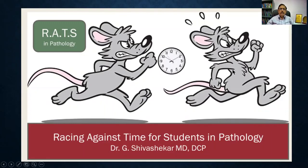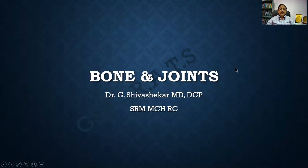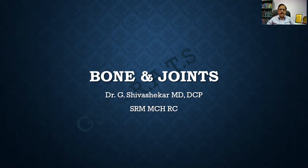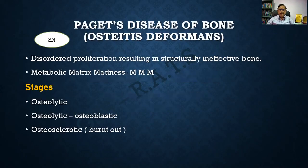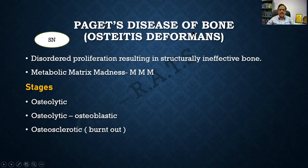Welcome students to Radson Pathology. We shall be continuing with bone and joints. For today's class I have chosen a couple of short notes that are difficult for students but important in the examination. The first one is Paget's disease of the bone. Please be careful — there is another disease, Paget's disease of the breast, that is also asked as a university question; we should not interchange and write.